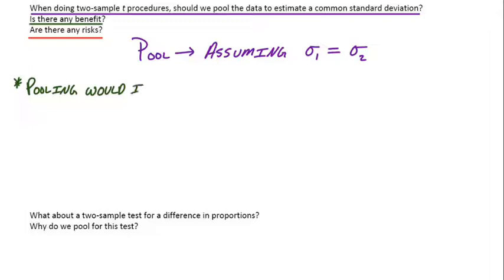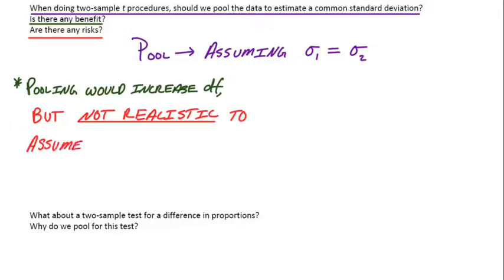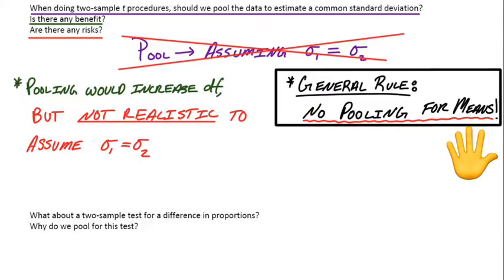So when you do a two-sample T interval in your calculator or a two-sample T test, it'll ask you if you'd like to pool the data. And if you pool, that assumes that the population standard deviation for the first group is somehow the exact same as the population standard deviation for the second group. What would the benefit be in green here? Well, pooling it would actually increase our degrees of freedom. So that would be a good thing. However, that's not realistic at all. So it's not realistic to assume that we'd have the same standard deviations for each population. That's a pretty bold assumption. So we are not going to pool our data. So as a general rule, no pooling for means.